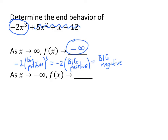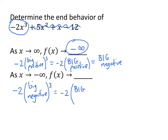Let's do the same analysis for the second part. As x goes to negative infinity, x is a big negative number. So we have negative 2 times a big negative number to the third power. When we multiply a big negative number by itself three times, the magnitude gets really, really big. And since we're multiplying three negative numbers together, the result is negative. So this is negative 2 times a really big negative number. A negative times a negative is positive, so this turns out to be a big positive number. That means as x goes to minus infinity, f of x goes to positive infinity.